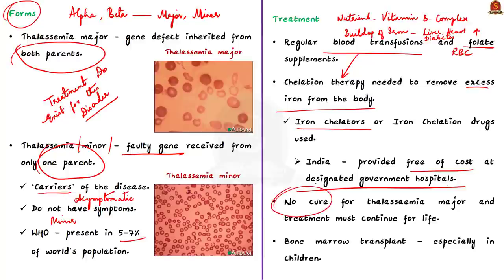The news concerns the non-availability of these iron chelation drugs. Importantly, there is no cure for thalassemia major, meaning treatment must continue for life. Other than blood transfusions and chelation therapy, bone marrow transplant is also a treatment used in some people, especially children. These are the prelims-related facts to keep in mind when reading about thalassemia.